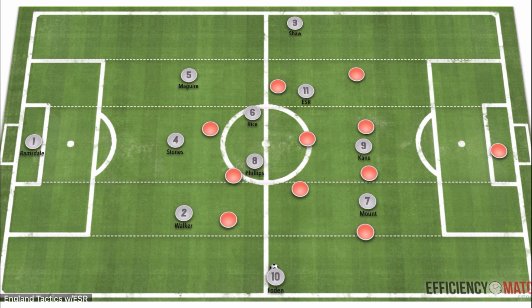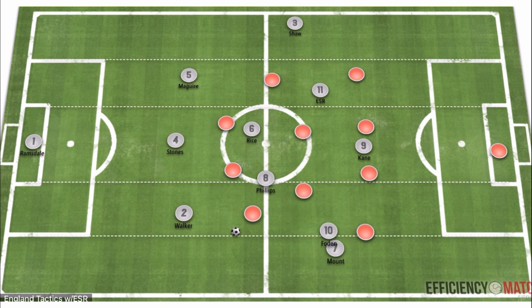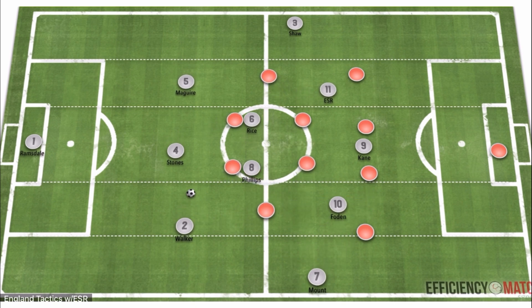Here we have Foden dropping wide as he sometimes would do at Man City, taking advantage of the space and pulling out midfielders. Joining him is Phillips jumping from a holding midfield position, creating a wide structure of three players to then progress the ball further forward.